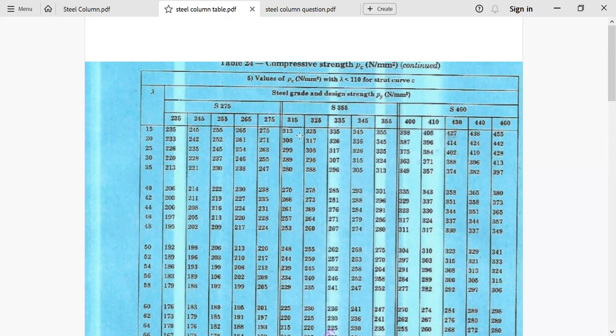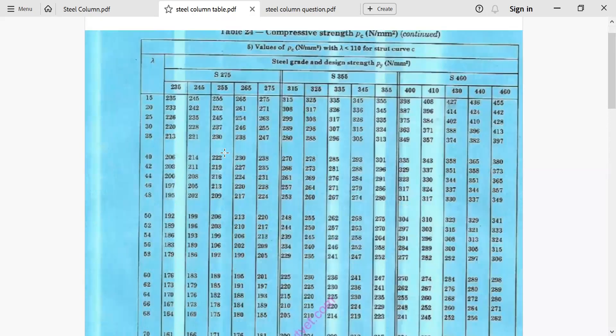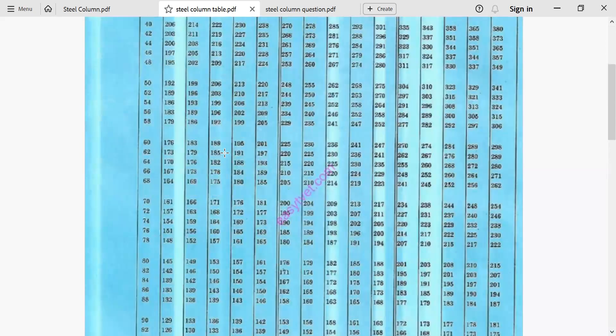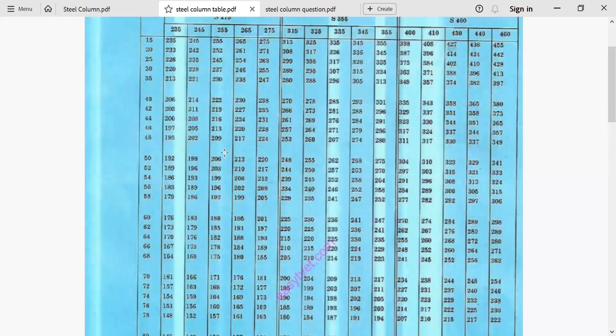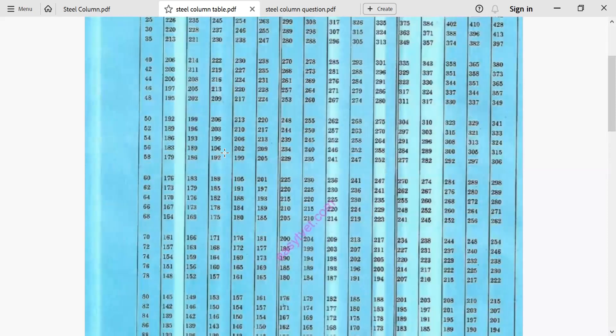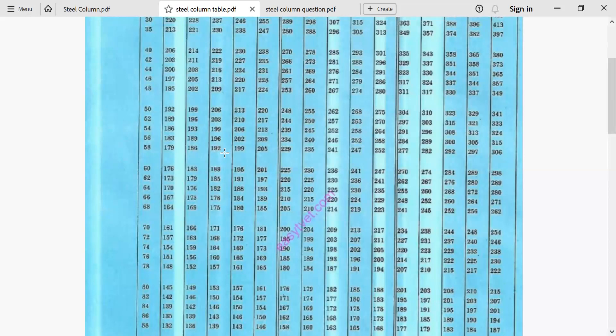Now, we locate the point of intersection between 81.08 and 275. When you look at our table here, we cannot get 81.08. We only have 80 and 82. Now, what we'll do, we'll take intersection between 80 and 275, which is 161, and the intersection between 82 and 275, which is 157.